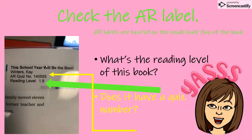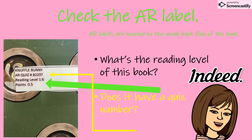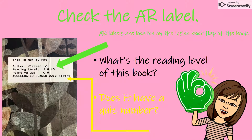Here's another one. This School Year Will Be the Best is the name of the book — that's a really long title. All you have to do is type in the quiz number 140555. Notice its reading level is a 1.9. Knuffle Bunny — one of my favorites. There's your quiz number and your reading level, 1.6. I should not be seeing very many third, fourth, or fifth graders taking quizzes on Knuffle Bunny. And another book: This Is Not My Hat, a 1.6. Same thing, reading level 1.6 — third, fourth, and fifth graders, that's a no-no. The quiz number is 154574.